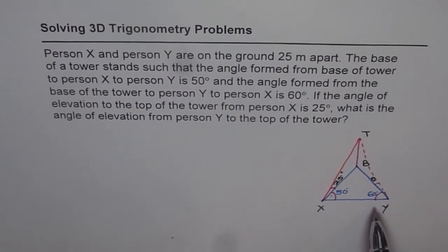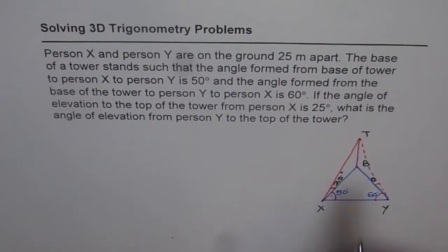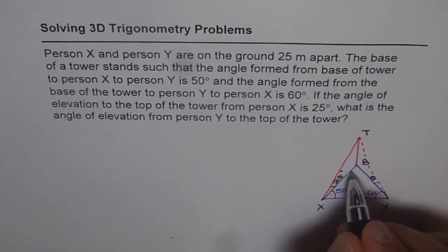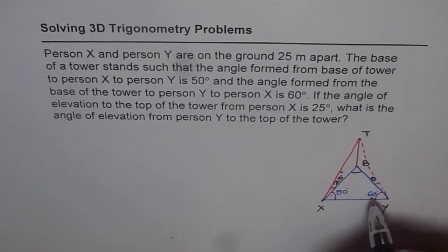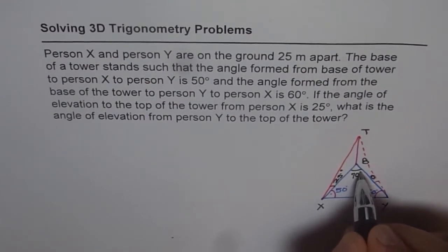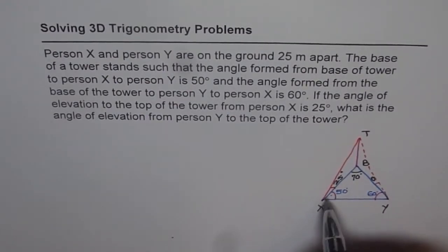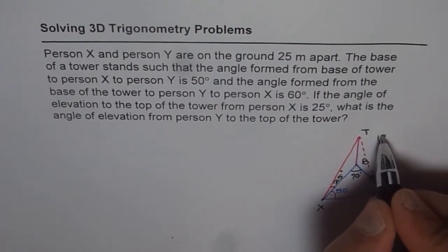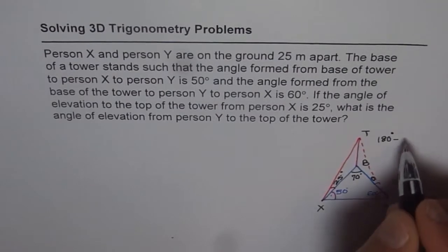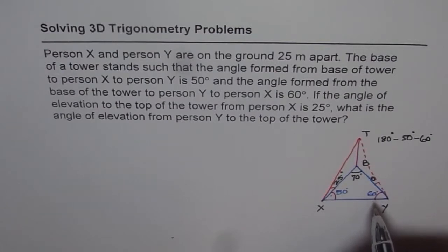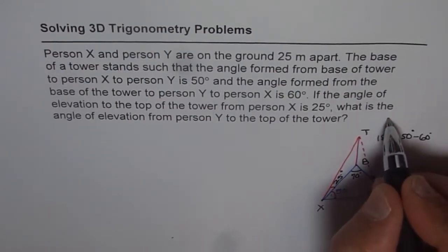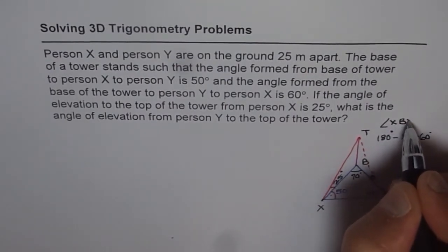From this triangle, we can find the vertical angle, which equals 180 minus 50 minus 60. That is 180 minus 110, which is 70 degrees. So we get angle XBY as 70 degrees, found by doing 180 degrees minus 50 degrees minus 60 degrees, since the sum of angles in a triangle is always 180 degrees.